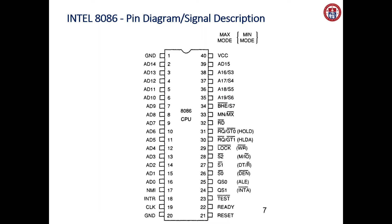Out of those 40 pins, 32 signals are common signals. Eight signals are separately used for minimum mode, and eight signals are separately used for maximum mode. We will see one by one what signals are available.